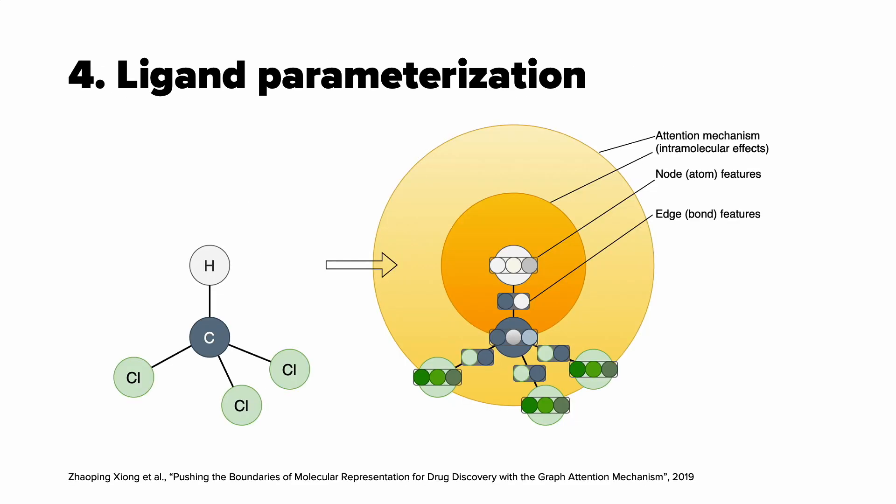First this is an example of ligand parameterization. And since we are going to use graph neural networks, we have to represent the ligand and the receptor as graphs. And here you can see a molecule of trichloromethane which is parameterized as a graph. You can see icons of vectors and each atom and each bond is represented as a vector with some particular features.